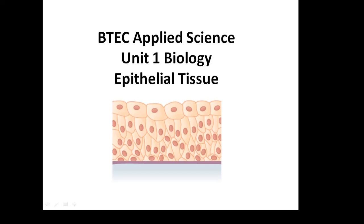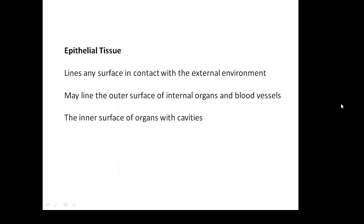BTEC Applied Science Unit 1 Biology: epithelial tissue. What is epithelial tissue? Well, 'epi' means outside, and epithelial tissue lines any surface in contact with the external environment. It may line the outer surface of internal organs and blood vessels, and if there's an organ with a cavity, such as your stomach, then the inner surface of organs with cavities. Remember, 'epi' means outside.